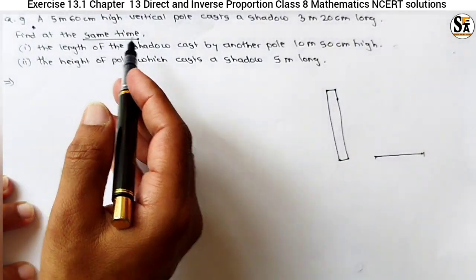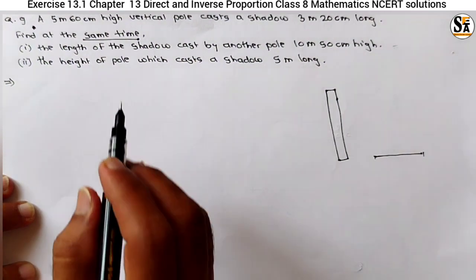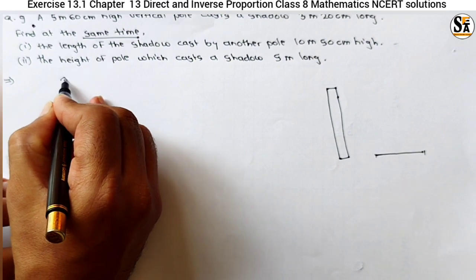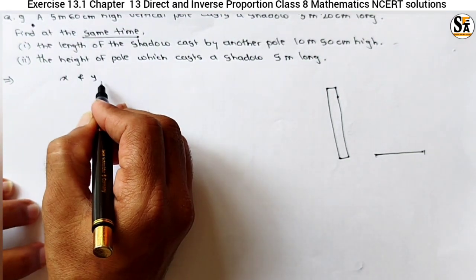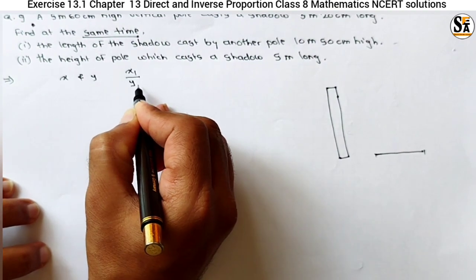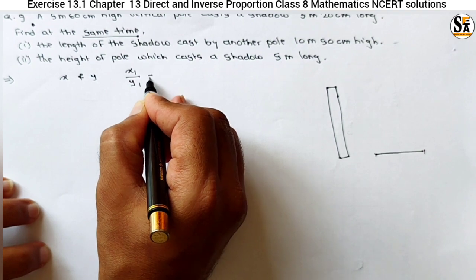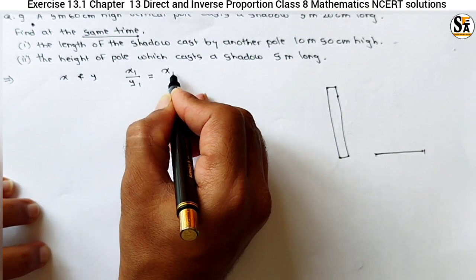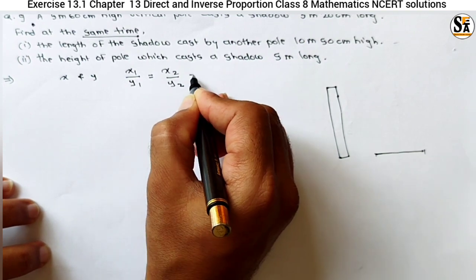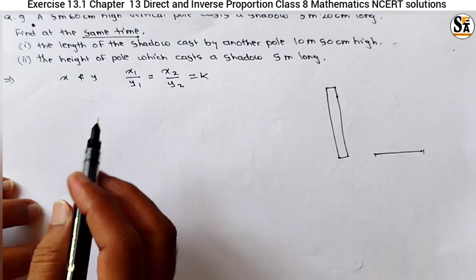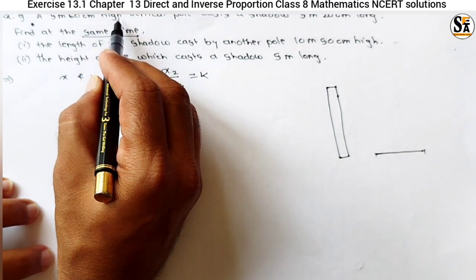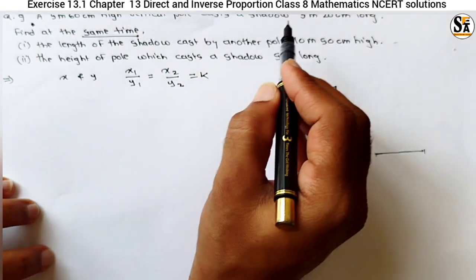Here we are using direct proportion. For direct proportion, if x and y are two variables, they are set up in direct proportion only if the ratio of different values of x to the different value of y at different stages is always constant — meaning x1 upon y1 equals x2 upon y2, that is k. Here, x will be the actual height of the pole and y will be the length of the shadow.